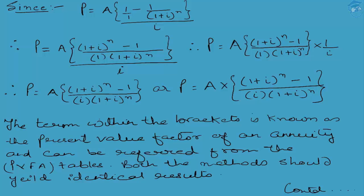As discussed quite a number of times, basically we always have two methods of calculating numericals: one is a conceptual framework, and the second is a direct formula through which we refer to the tables. We have also seen that when n is quite small and i is a simple number, it is good to use the conceptual framework. But when n is quite long and i is not a benign, small number — it's a complicated number — it is always advisable to take help of the annuity tables, the present value tables, or the future value tables as the case may be.